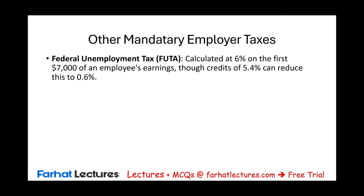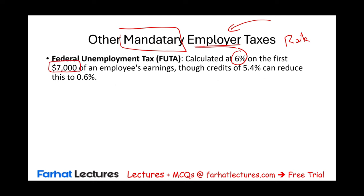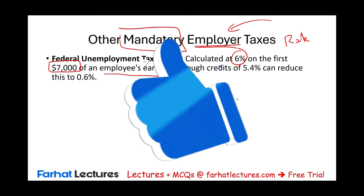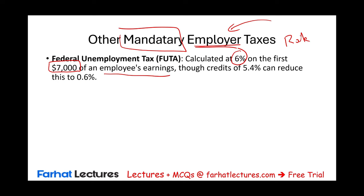Federal unemployment tax, or FUTA, is a mandatory employer tax — the employer pays it, not the employee. The rate is 6% and it applies only up to $7,000 of an employee's earnings. Once the employee earns $7,000, the employer stops paying. However, the federal government gives a 5.4% credit if the employer is in good standing with state unemployment payments, resulting in a net FUTA rate of 0.6%.